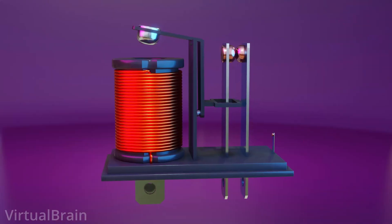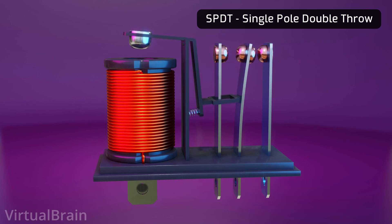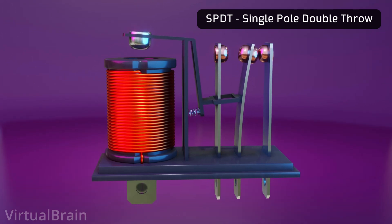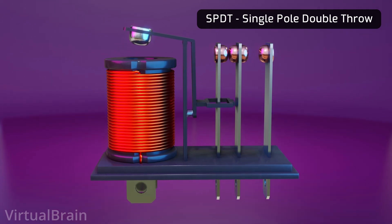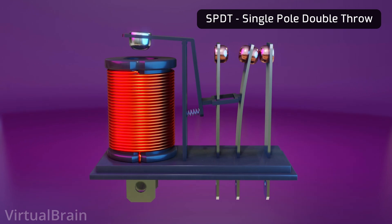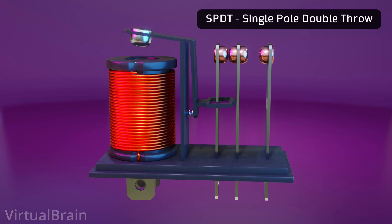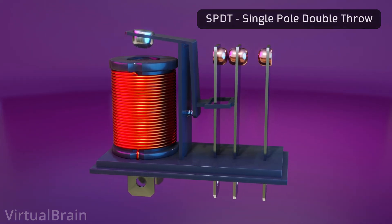If we convert our single throw relay into a double throw relay, we will now have 3 connectors on the side of the circuit being controlled. By analyzing its operation we will realize that it is basically a fusion of the two previous examples. Each time the electromagnet changes state and moves the moving armature, all it will do is open the circuit that was closed and close the circuit that was open. In other words, in the same relay we will have a connector that behaves as normally open and another that behaves as normally closed, making it more versatile for different applications.